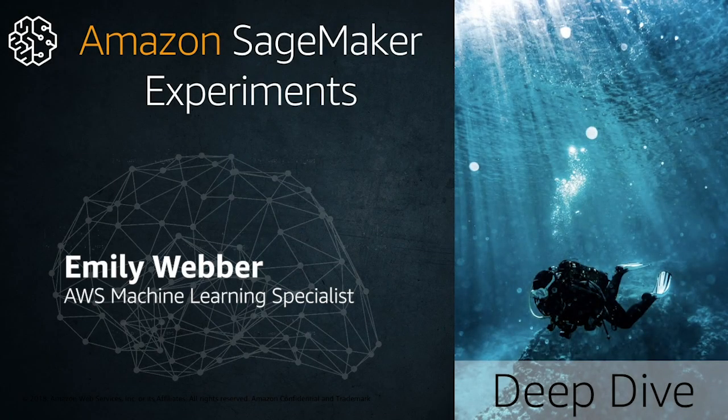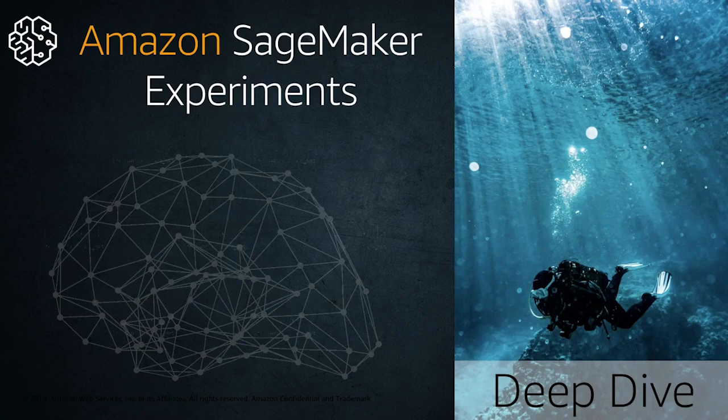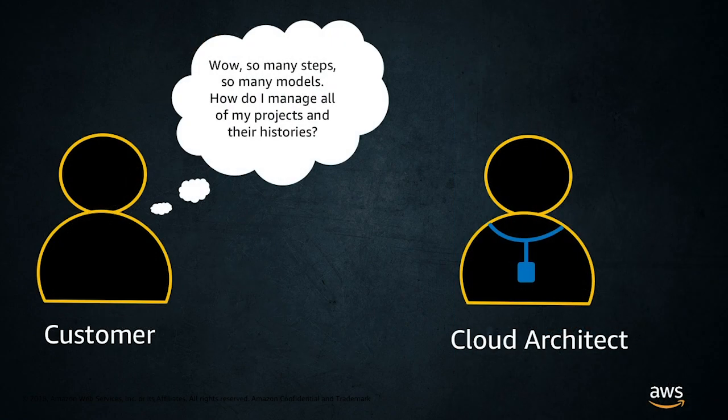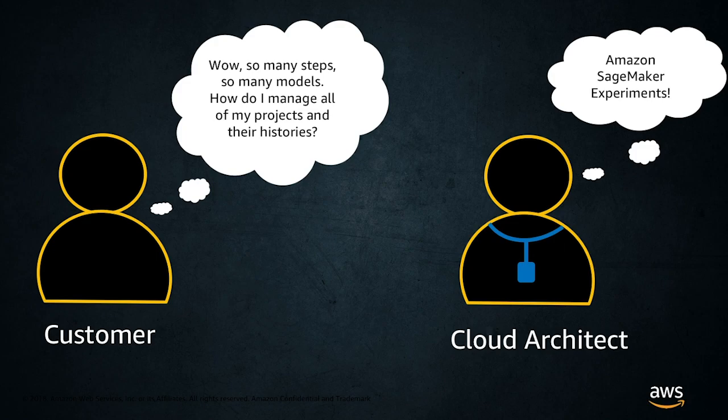My name is Emily Weber, Machine Learning Specialist at Amazon Web Services, and today we're going to talk about experiments. This is your deep dive. You might be thinking to yourself: there are so many steps involved in this process, and I have a lot of different models. How do I manage all of my projects and their histories? The answer is Amazon SageMaker Experiments.